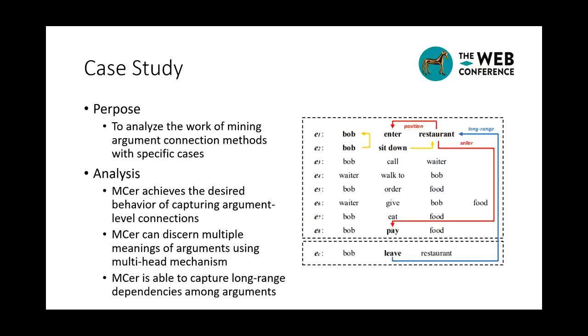Finally, a case study illustrates how well our approach works in a case of restaurant visiting. Yellow, red, and blue arrows come from the attention weight between arguments. Yellow lines indicate that our method achieves the desired behavior of capturing argument-level connections. Red lines show that we can determine multiple meanings of arguments using multi-head mechanism. Blue lines mean that our approach is able to capture long-range dependencies among arguments.